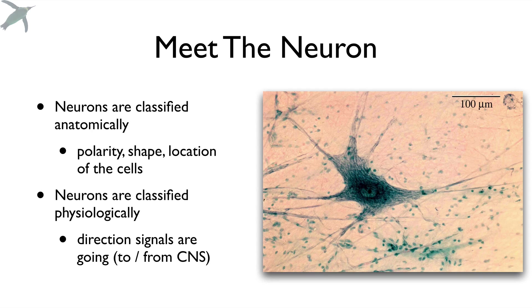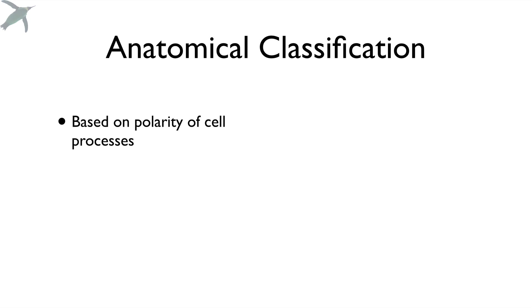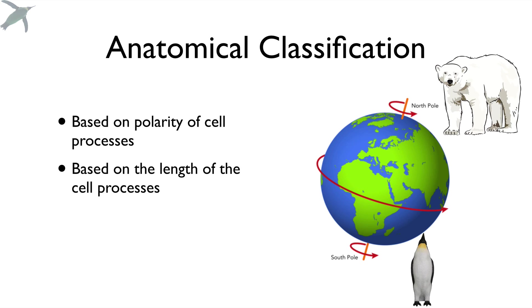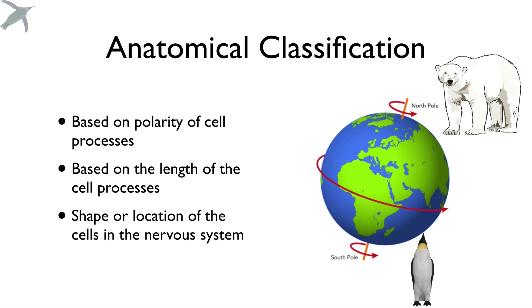We're going to meet the neuron. We classify neurons anatomically and physiologically, so we're going to do shape first. The basic way we classify neurons has to do with polarity — the orientation of cell processes. We classify neurons based on the relative length of those processes, and then there's a sort of catch-all category based on shape and where we find them.